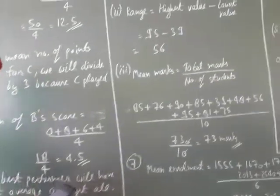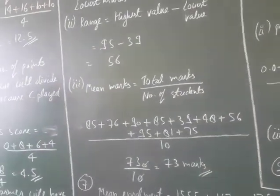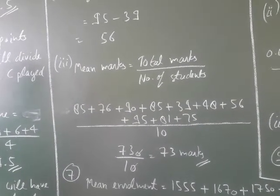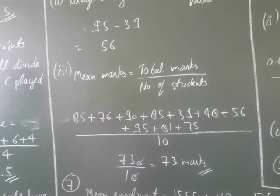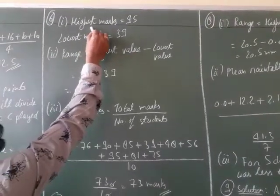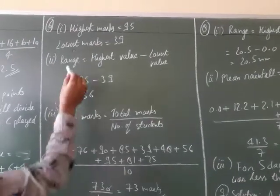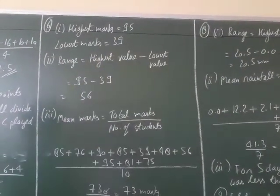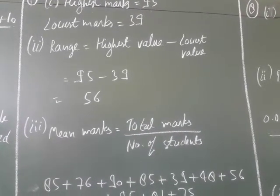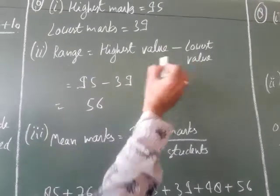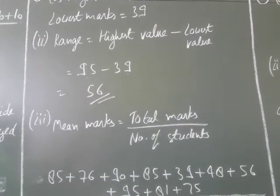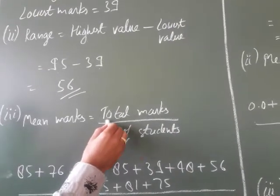Sixth question: marks out of 100 obtained by a group of students in a science test are given. Highest marks obtained are 95 and lowest marks are 39. Range = highest value minus lowest value = 95 minus 39 = 56. Mean marks = total marks divided by number of observations = 730 divided by 10 = 73 marks.